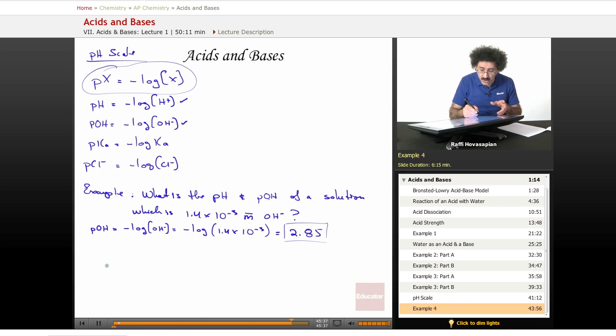Now, we want the pH. Well, we know that the H concentration times the OH minus concentration is equal to 1.0 times 10 to the negative 14. So the H plus concentration equals 1.0 times 10 to the negative 14 divided by 1.4 times 10 to the negative 3. That's going to equal 7.2 times 10 to the negative 12.